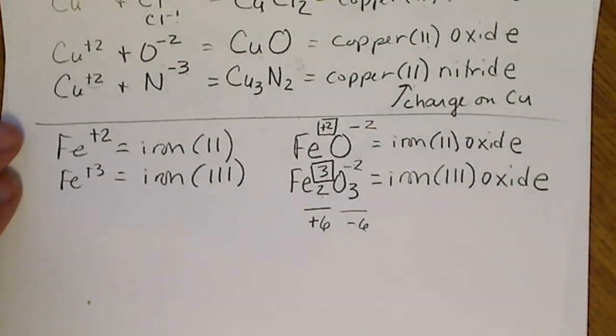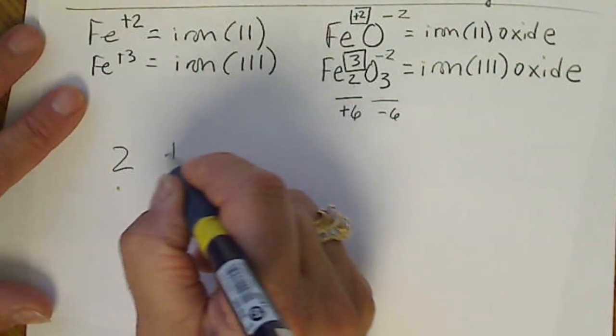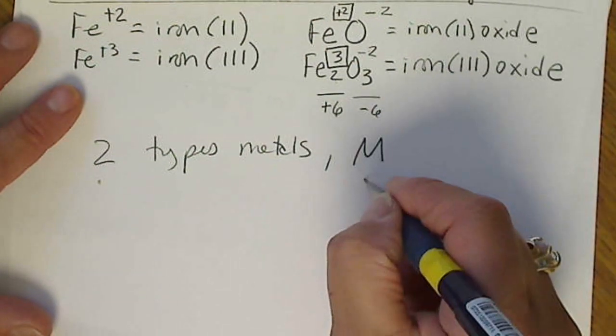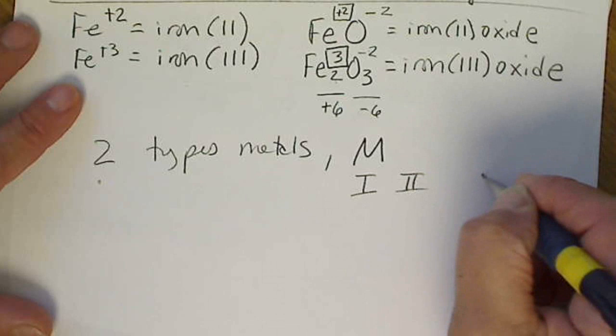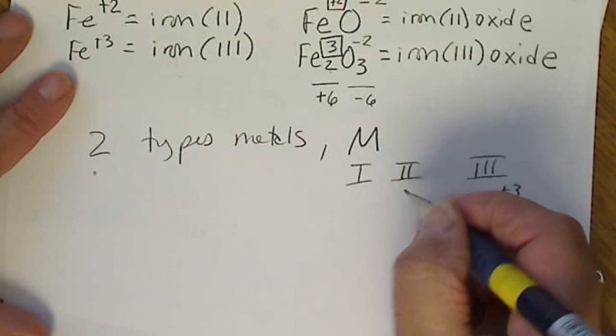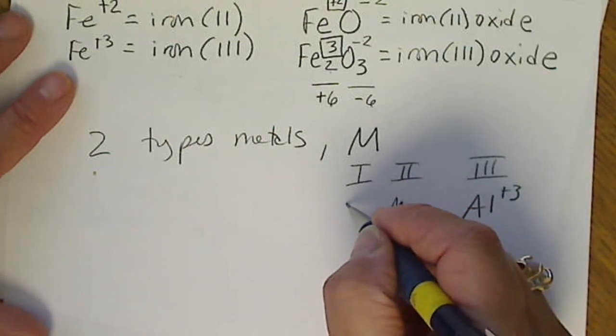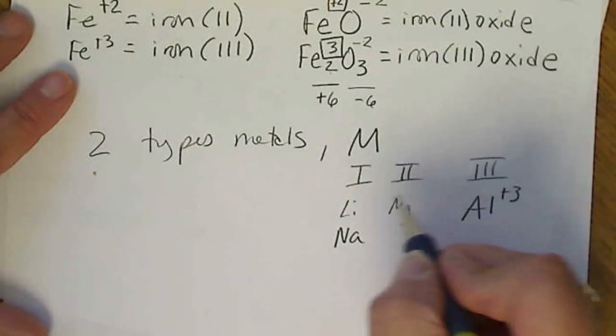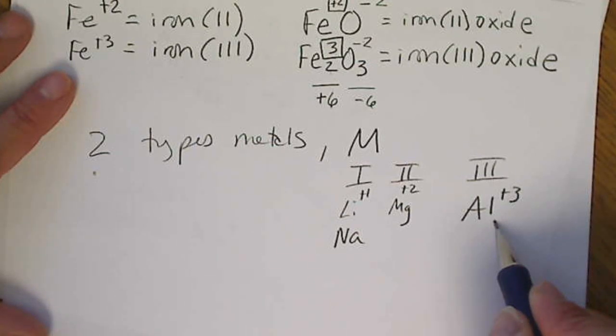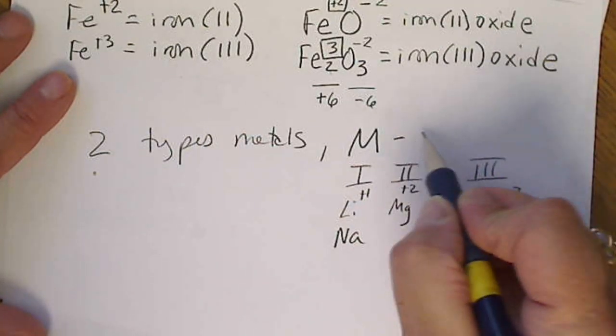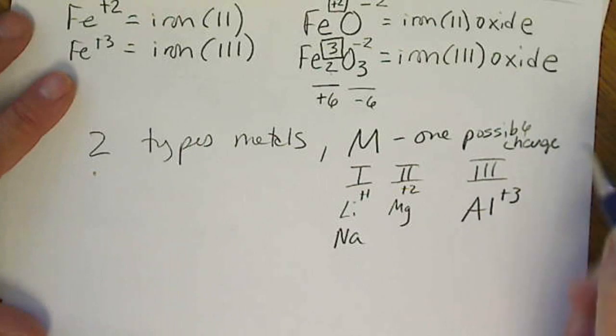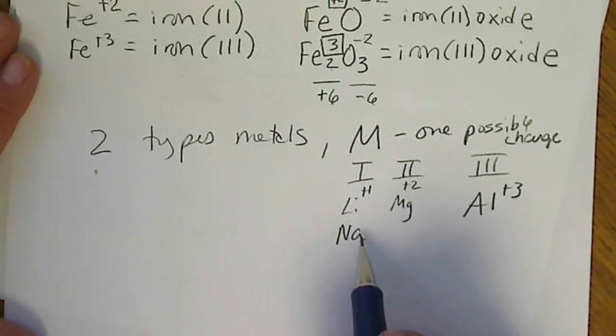And the summary of what we've been talking about, the two types of metals. I'm just going to put M. That's a metal that's in column 1, column 2, or column 3, which is basically aluminum. Column 2 would be magnesium. Column 1 would be lithium and sodium. So column 1 plus 1, column 2 plus 2, column 3, aluminum. If we know the charge on the metal, this is only one possible charge. When the metal only has one possible charge, it does not need a Roman number after.